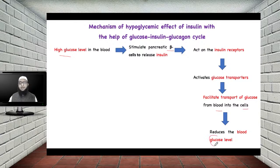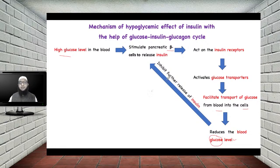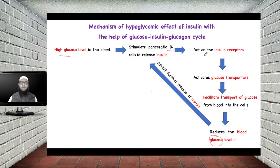Why is blood glucose level reduced? Because glucose moves from blood into the cells after release of insulin. Once blood glucose level is reduced or maintained to normal level, this causes inhibition of further release of insulin. Since further release of insulin is inhibited, this inhibition stops the sequence of events — there is no activation of glucose transport and it further stops movement of glucose from blood into the cell.